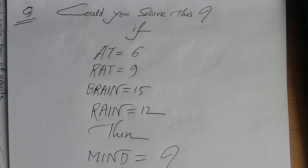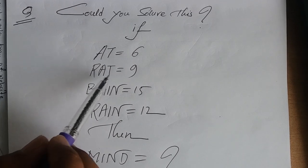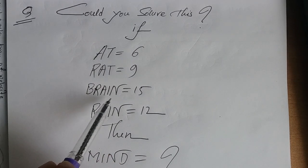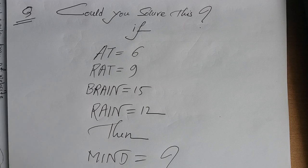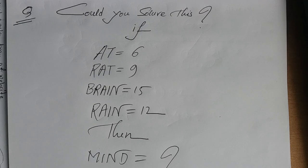Okay, welcome back. Today I will discuss mental ability related math questions. I'm ready to show you a question. Could you solve this? If AT equals 6, RAT equals 9, BRAIN equals 15, RAIN equals 12, then what does MIND equal? So the question involves letters and numbers.